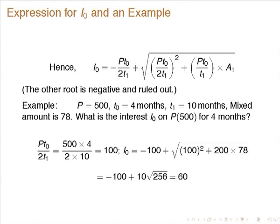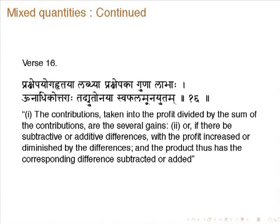An example is given in the commentary: p = 500, t₀ = 4 months, t₁ = 10 months, and the mixed amount a₁ = 78 — that is what the second borrower owes to the first borrower, principal plus interest. Using the formula, we get i₀ = 60. There is already some mathematical sophistication here.